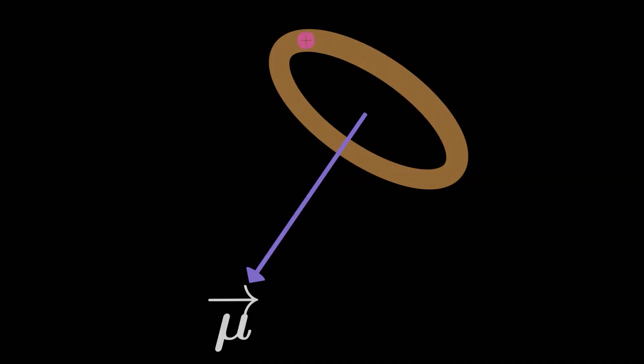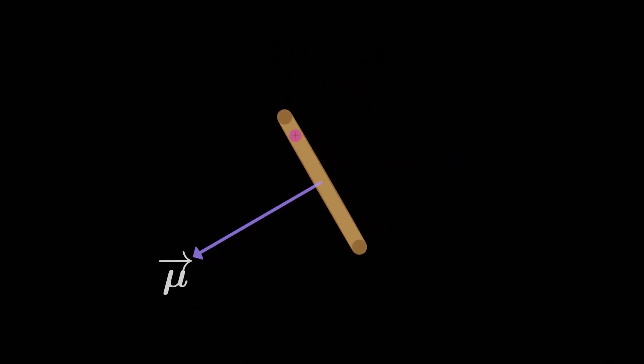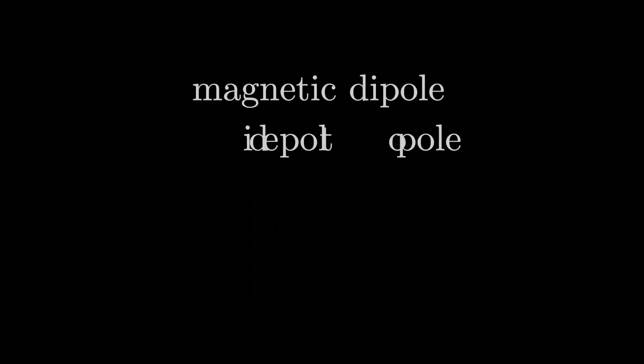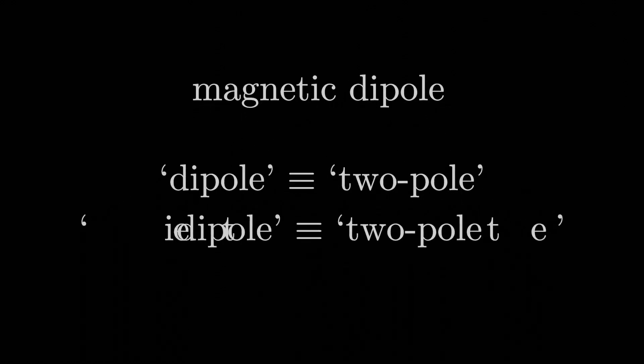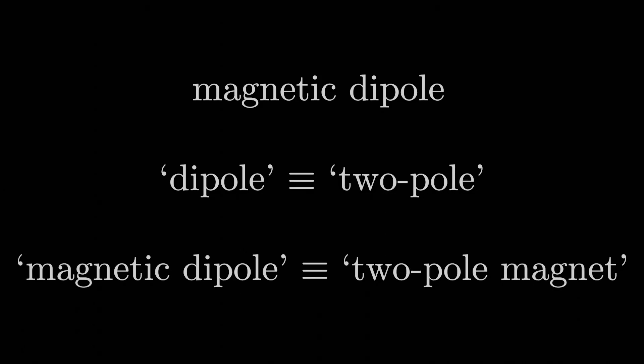But do you also remember that we can sort of call a current loop a magnetic dipole? In other words, a current loop is just an entity that has its own magnetic dipole moment. Now that's kind of a loaded phrase there, magnetic dipole. Let's think about that for a second. Dipole just means two poles. So it's like we're saying two pole magnet. How does it make sense to call a current loop something like a two pole magnet?